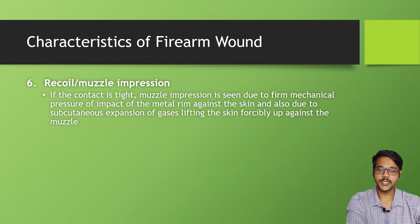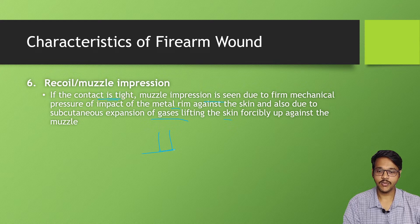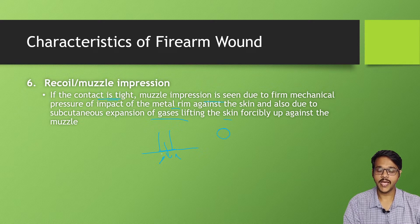Next are muzzle impressions. These are seen only when the muzzle is tightly in contact with the skin. The impression is caused by the firm mechanical pressure of the metal rim of the muzzle against the skin, and also due to subcutaneous expansion of gases lifting the skin against the muzzle. If the muzzle is in close contact with the skin, it leaves a visible mark, as explosive gases cause the skin to rupture and the muzzle rim pattern to be imprinted on the skin.